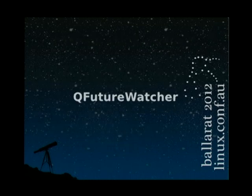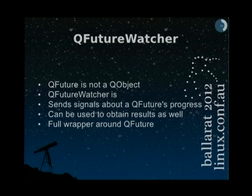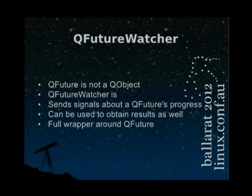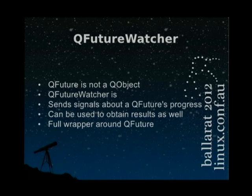I mentioned QFuture before. QFuture is basically a return type, but you should know how to handle it. The catch is that QFuture is not a QObject — a QObject has overhead, and since QtConcurrent can be used without multi-threading, there's no reason for QFuture to be one. But QFutureWatcher is a QObject. It can send a signal whenever the result is available or whenever QFuture is finished. It can even signal progress. QFutureWatcher also provides results and is a full wrapper on QFuture.